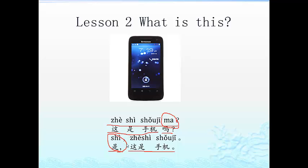In Chinese we don't have a simple yes or no. To answer a yes-or-no question, we usually repeat the main verb. In this sentence the main verb is 是, so we repeat 是 — meaning 'is.' 这是手机吗? 是, 这是手机.